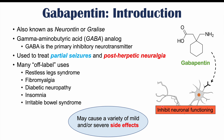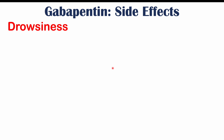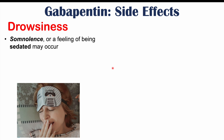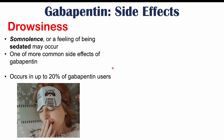Gabapentin use can lead to a variety of mild and/or severe side effects, and we're going to discuss those from most common to least common. One of the most common side effects is drowsiness — somnolence, a feeling of being very tired or sedated — and this occurs in up to 20% of gabapentin users.